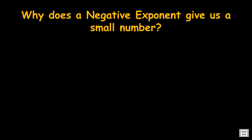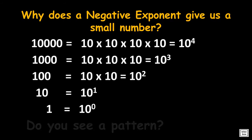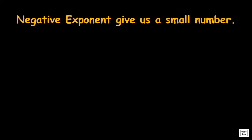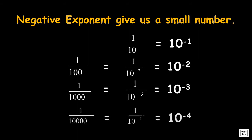So, why does a negative exponent give us a small number? First look at this pattern. The exponent says how many times to use the number in a multiplication. Next, look at this. Again, do you see a pattern? The exponent with the negative sign says how many times to divide the number.